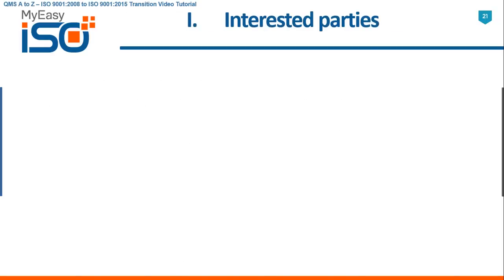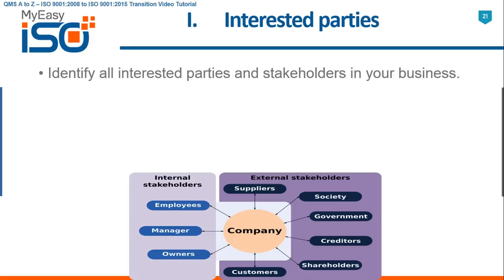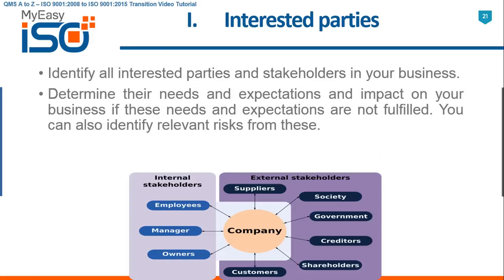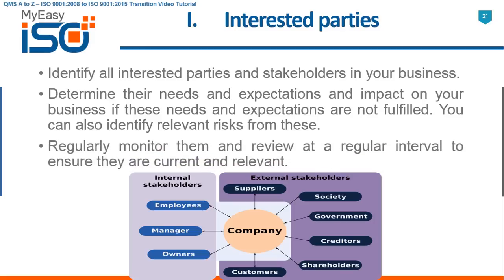I. Interested Parties. Identify all interested parties and stakeholders in your business. Determine their needs and expectations, and the impact on your business if these needs and expectations are not fulfilled. You can also identify relevant risks from these. Regularly monitor them and review at regular intervals to ensure they are current and relevant.